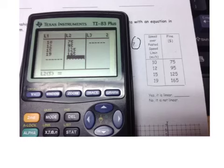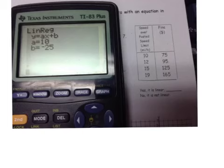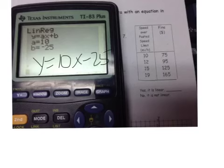We'll skip over to number 7 here. Show you what one looks like with real world. Again we've taken our x values and we're putting them over here in L1 and our y's in L2. And we get an equation of y equals 10x minus 25. And so again since those are nice numbers this is linear.